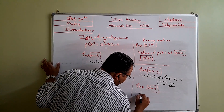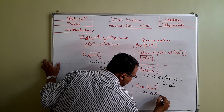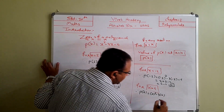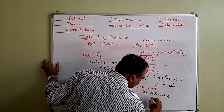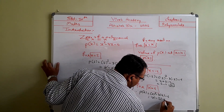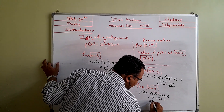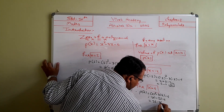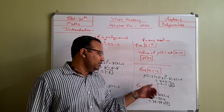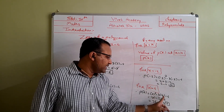Let us see p of 4: x squared minus 3x minus 4, so 4 squared is 16, 3 fours are 12, minus 4 gives minus 16. So 16 minus 16 we are getting 0 as the answer.